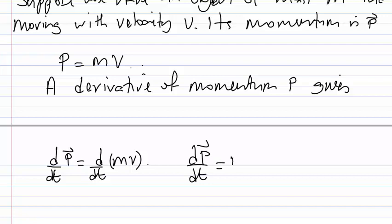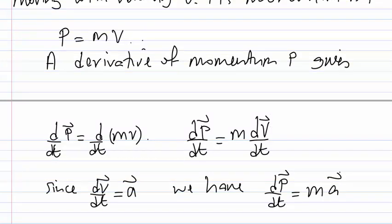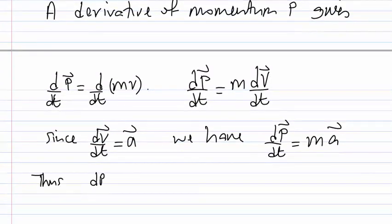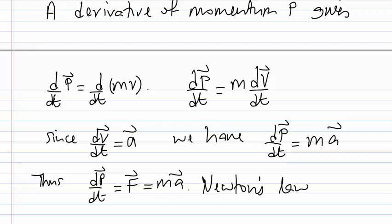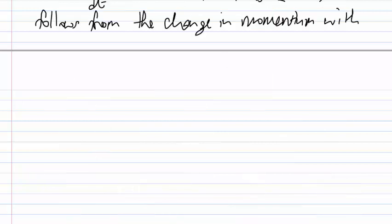So d/dt of P equals M times dV/dt. We know that dV/dt equals acceleration A. So this is just Newton's second law: dP/dt equals F which equals MA. Newton actually formulated the second law from momentum considerations — Newton's second law follows from the change in momentum with respect to time.